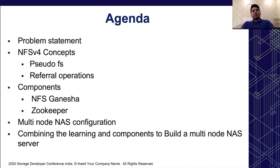First I will briefly talk about the problem statement, then we will touch upon NFS v4 concepts like referrals and pseudo FS with an example of each. After that I will give a brief introduction of the components used in creating the NFS v4 NAS, which includes the open source NFS Ganesha server and Apache Zookeeper. Surud will then walk us through the configuration and design of the multi-node NAS and finally combine all the pieces to build a NAS server.